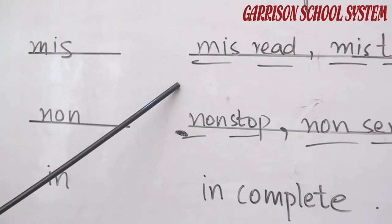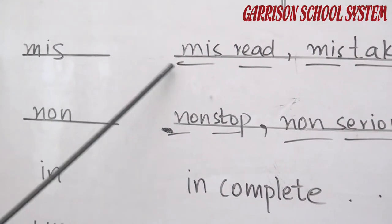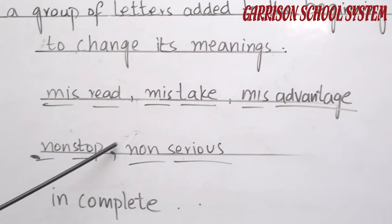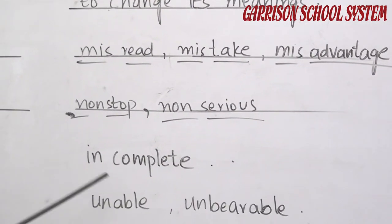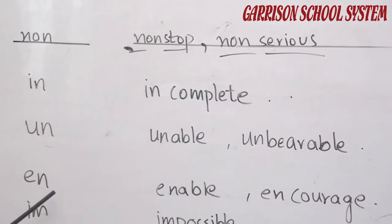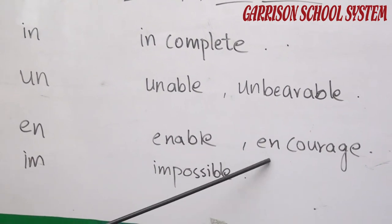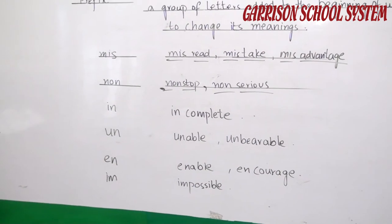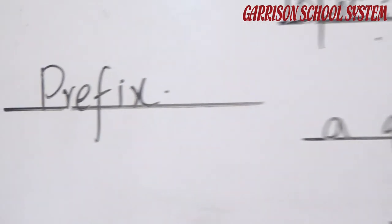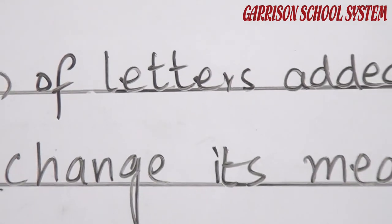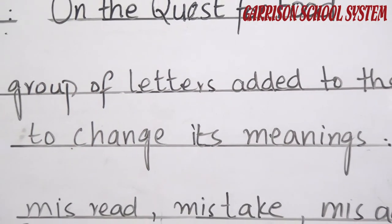Words made from these prefixes include: misread, mistake, disadvantage, non-stop, non-serious, incomplete, unable, unbearable, encourage, impossible. Look at the exercise on page 24 — you have to fill in the blanks with the correct words from the table given in the examples above, and find a few more prefixes and make new words from them.